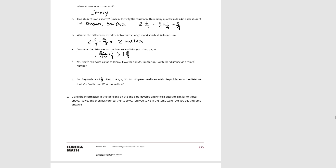Miss Smith ran twice as far as Jenny. Jenny ran 5 eighths, so 2 times that would be 10 eighths. They say to write it as a mixed number: 8 eighths plus 2 eighths equals 1 and 2 eighths, which simplifies to 1 and 1 fourth.